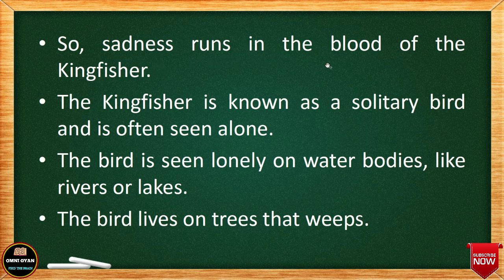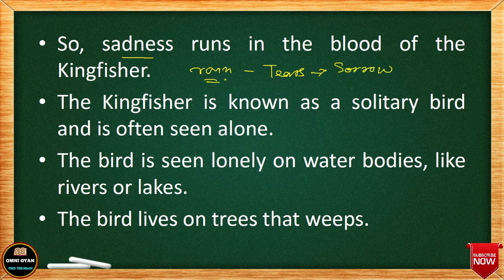Sadness runs in the blood of the Kingfisher. The rain symbolizes tears, and tears symbolize sorrow. Because rain is the grandmother of the Kingfisher, the bird has got sorrow from its grandmother. Tears here means rain and also represents sorrow, so by blood the Kingfisher has inherited this quality of sorrow.